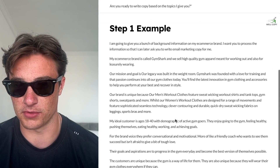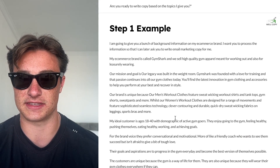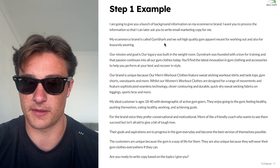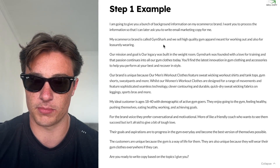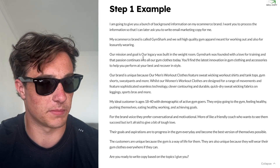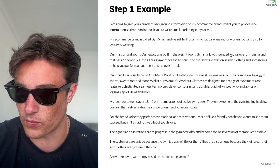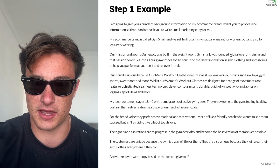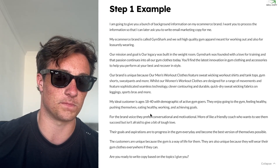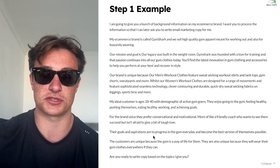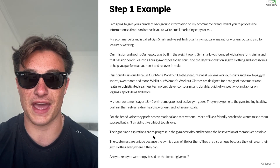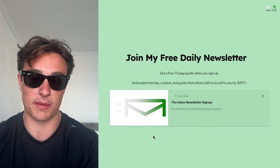Looking at this example — let's say this is Gymshark. The prompt goes: 'I'm going to give you a bunch of background information on my e-com brand.' Then you fill in details: Gymshark sells high quality gym apparel meant for working out but also for leisurely wearing. I just took a bunch of stuff from their website — 'our legacy was built in the weight room, founded with a love for training,' our brand is unique because of this, our ideal customer is this, brand voice, goals and aspirations, all that stuff. This is a pretty brief one, but that's how you prime it. We're actually going to show an example with this primer.